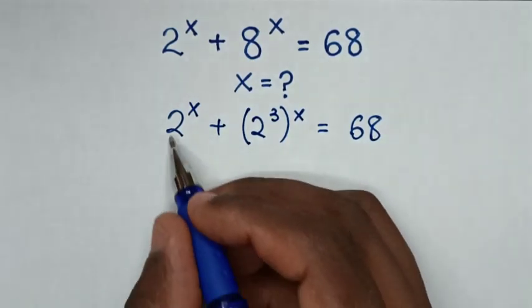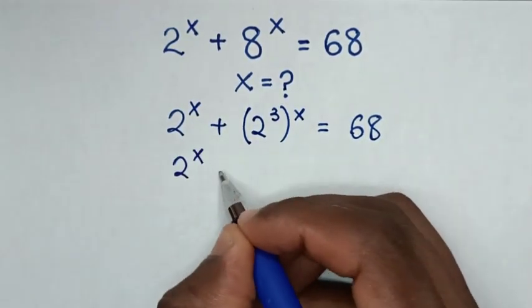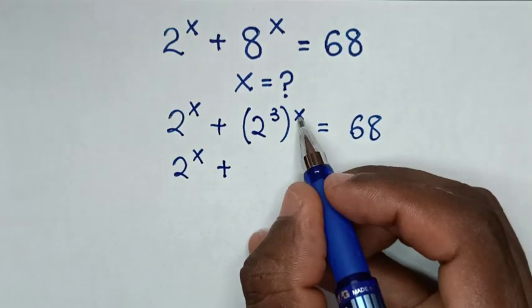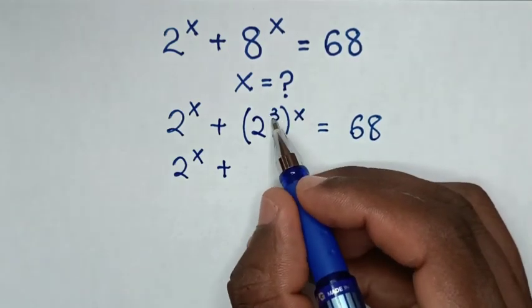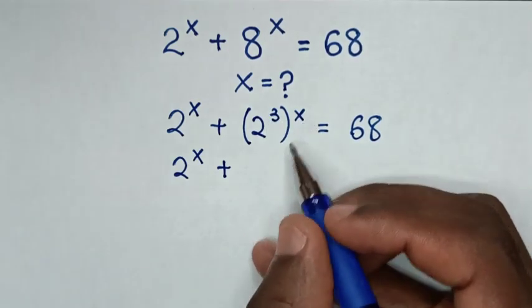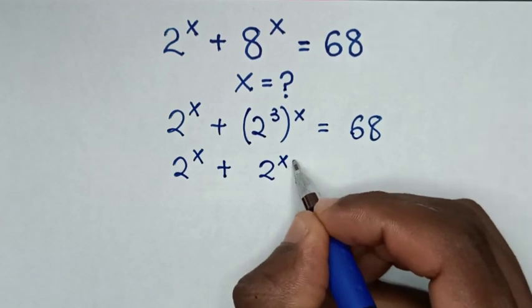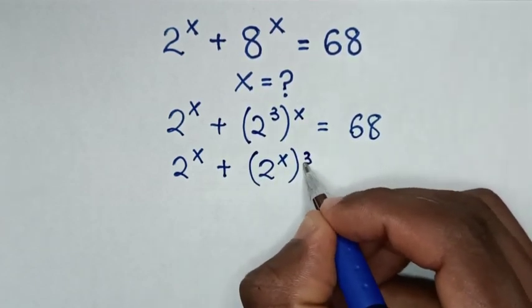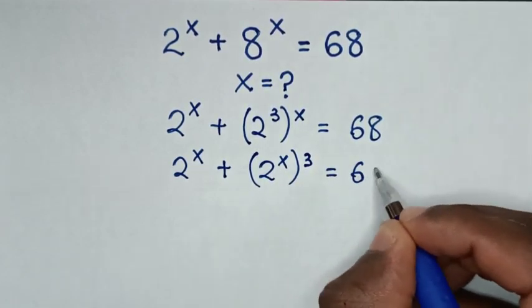Then in the next step, it will be 2 power x plus — here we exchange the power of x inside the bracket and the power of 3 outside the bracket — so it will be 2 power x bracket power of 3, is equal to 68.